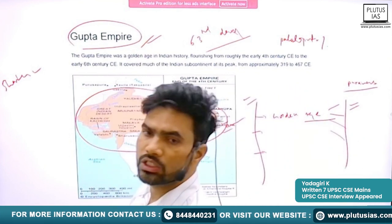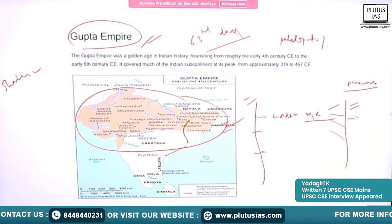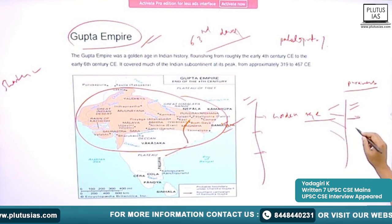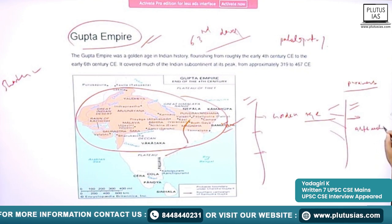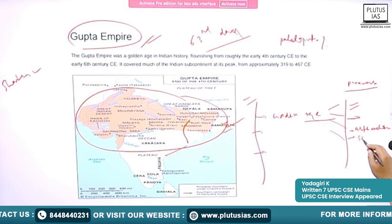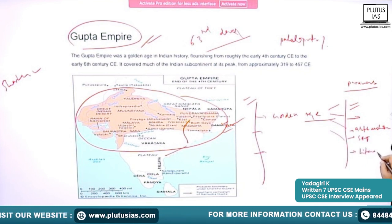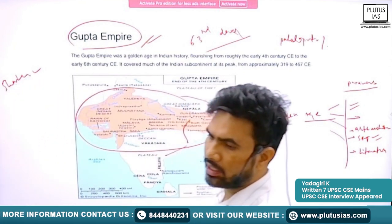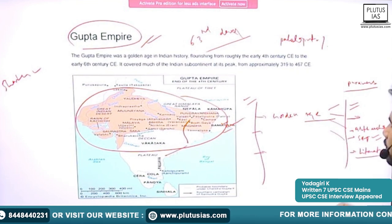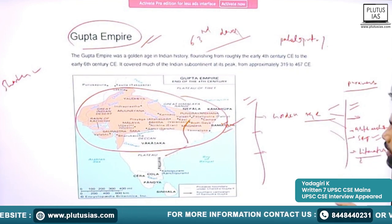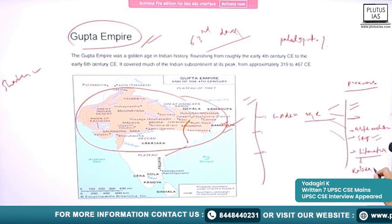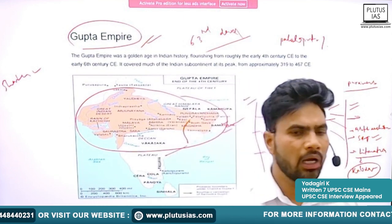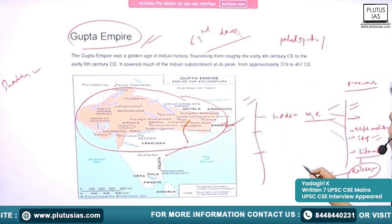However, modern or Marxist historians oppose this name, though they acknowledge the growth and development of art and architecture, literature, and science and technology. We will see figures like Varahamira, Brahma Gupta, and Sushrutha. In literature, Kalidasa — the greatest poet of India — is associated with the Guptans.